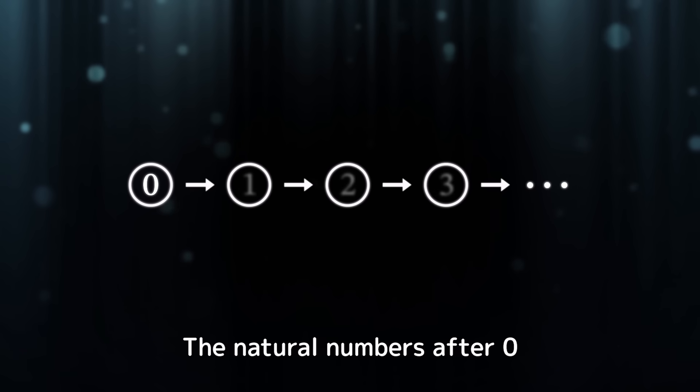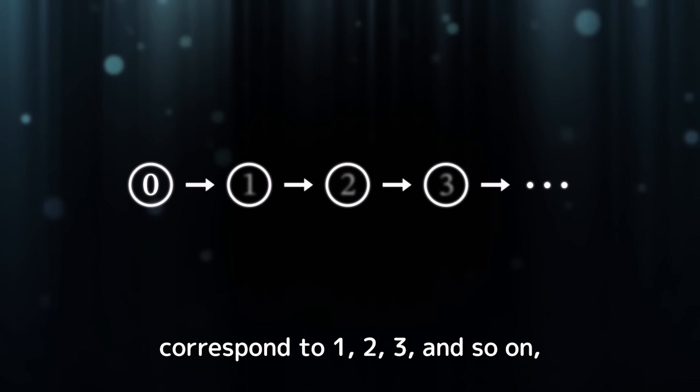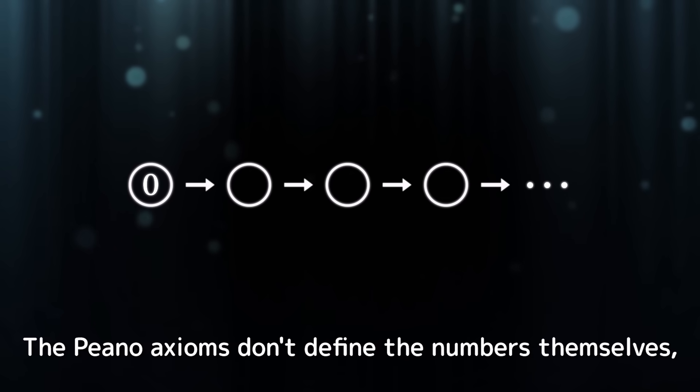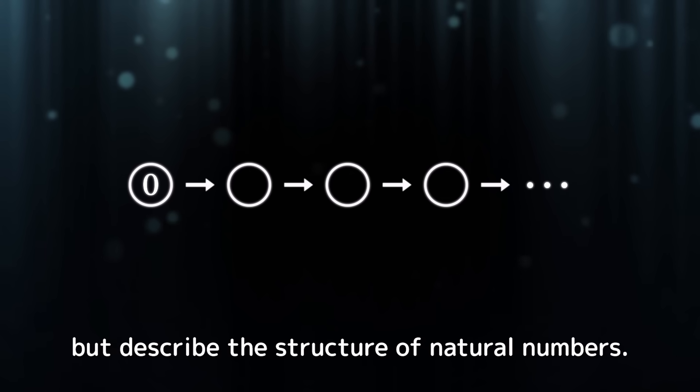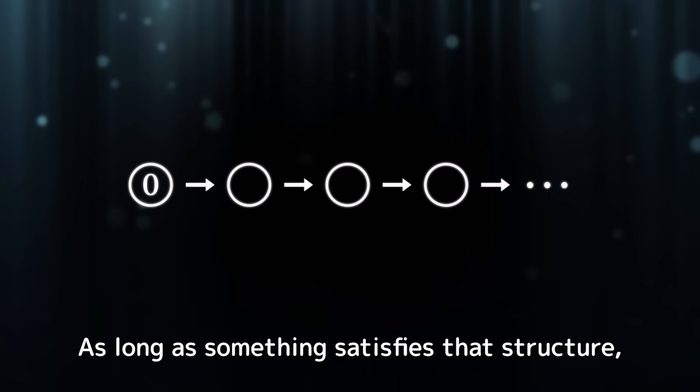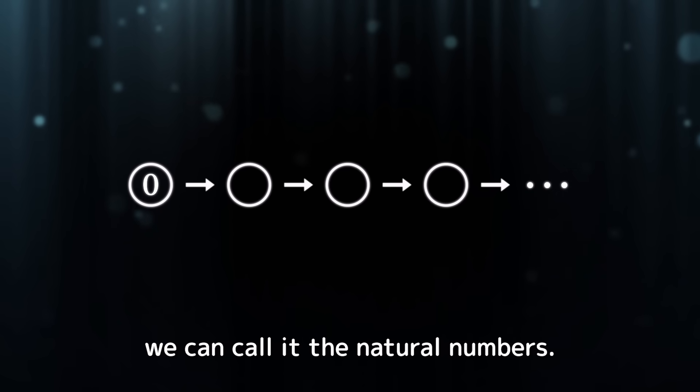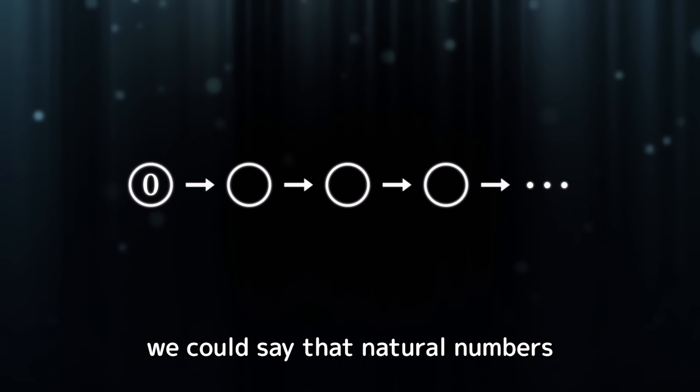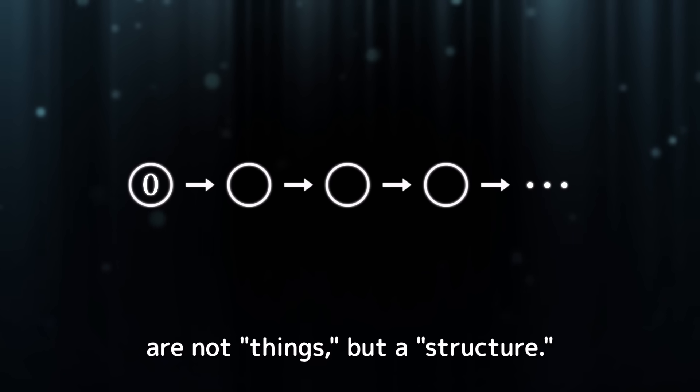The Peano axioms state these conditions more precisely. The natural numbers after zero correspond to one, two, three, and so on, but we haven't actually named them yet. The Peano axioms don't define the numbers themselves, but describe the structure of natural numbers. It doesn't matter how the numbers are built. As long as something satisfies that structure, we can call it the natural numbers. To put it strongly, we could say that natural numbers are not things, but a structure. Anyway, we've now given a clear construction of natural numbers.